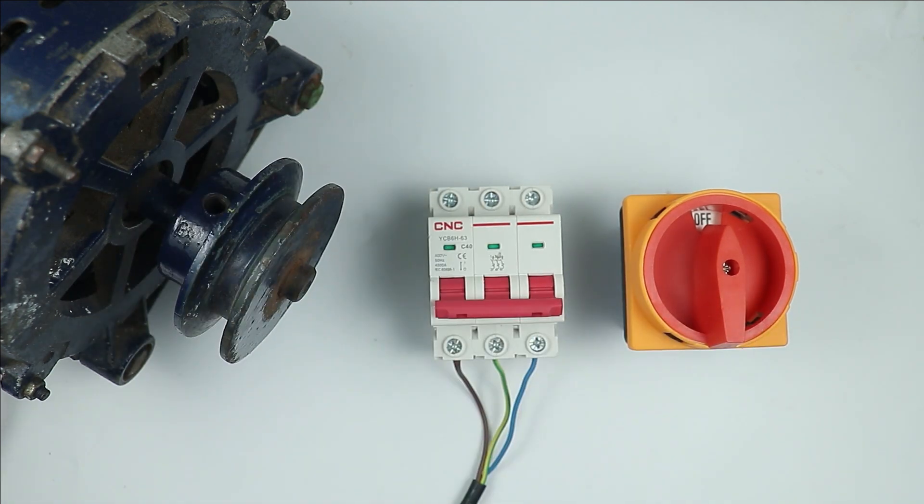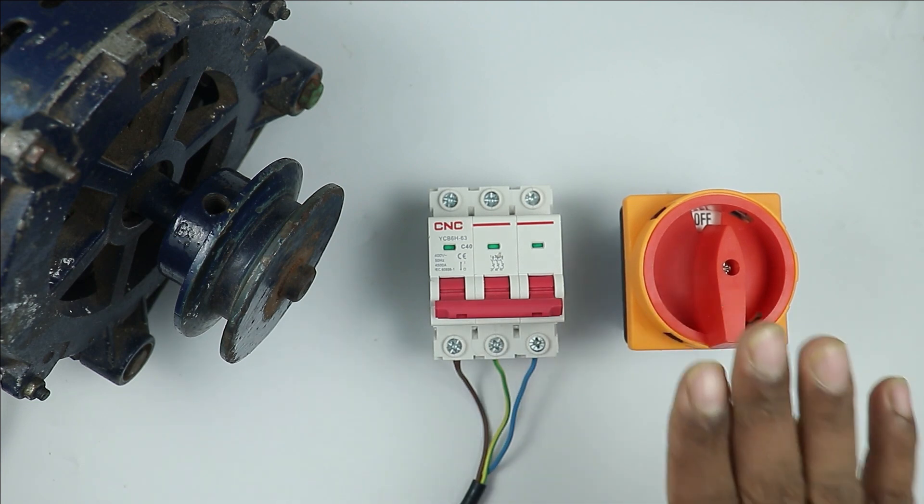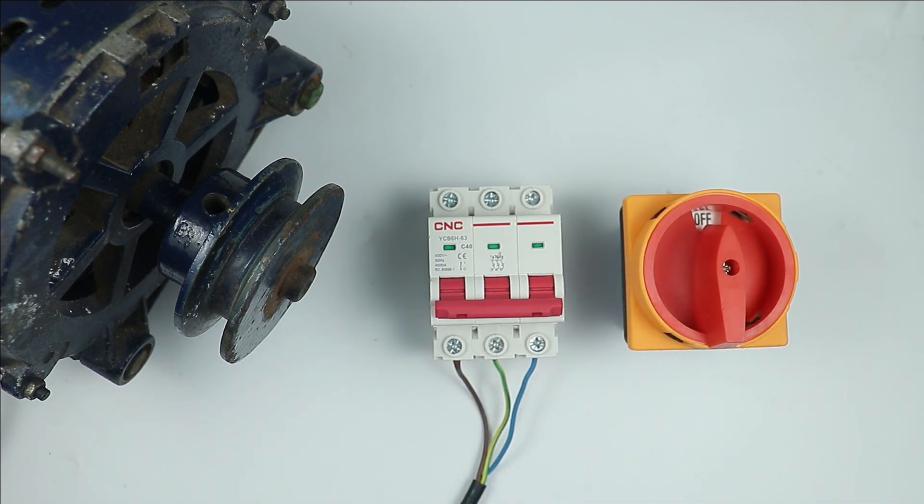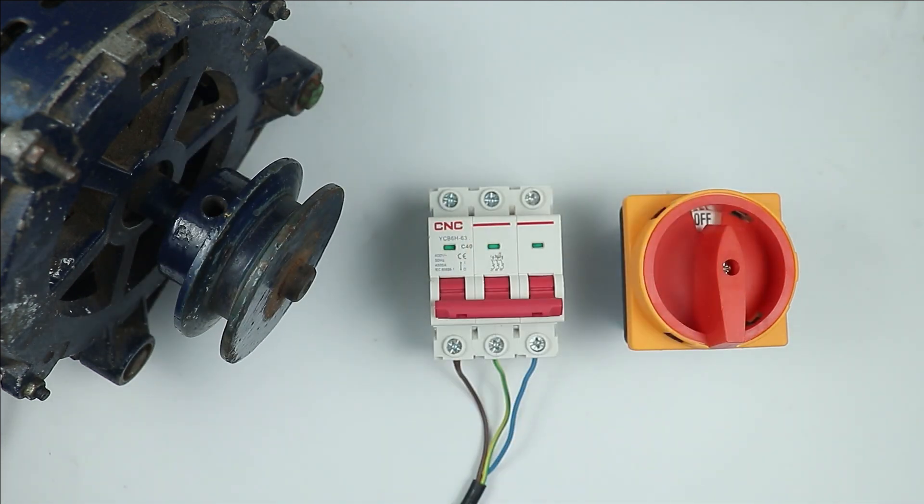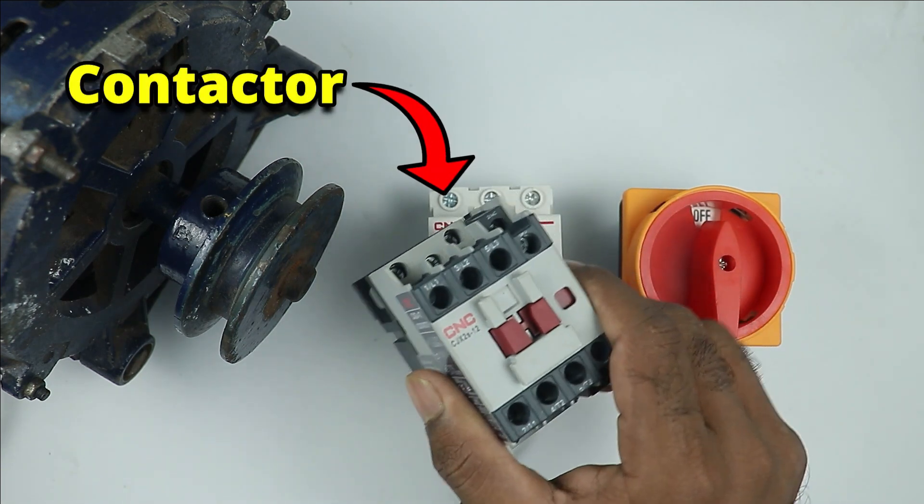Before understanding the connections of the rotary switch, let us first discuss why we want to use this rotary switch. As you know, whenever we want to turn on or off a three-phase motor, we generally use contactor.